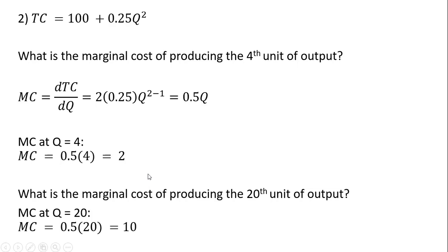We could ask the marginal cost at another level of output — in this case, say the twentieth unit of output. Same idea: plug 20 into the marginal cost equation. Where we see q, we plug in 20, and in that case the marginal cost of the twentieth unit is $10.